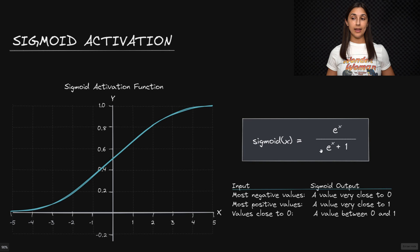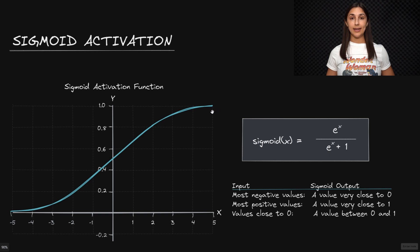Then we will get the activation of that node — the activated output of the node — before passing that as input onto the next layer. When using sigmoid as an activation function, we can intuitively think of the output of sigmoid when it is closer to one as meaning it is more activated.